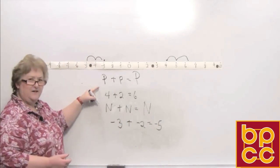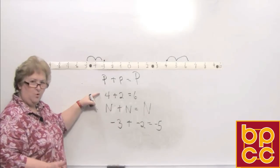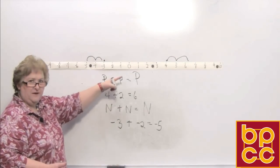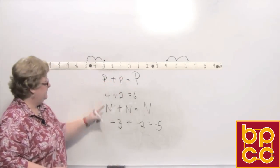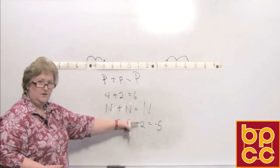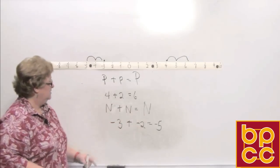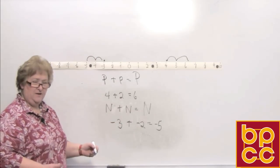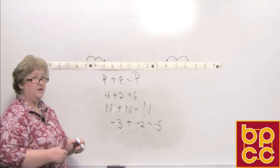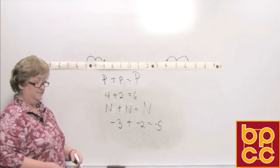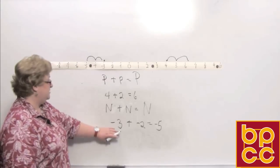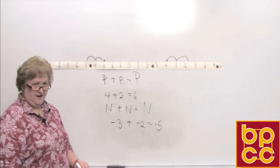When the signs are the same, you get more of the same. Positive and positive makes a whole bunch of positive. Negative, add more negative — a whole bunch of negative. So as long as the signs are the same in addition, you're going to get a number that looks larger. Negative 3 plus negative 2 is negative 5.